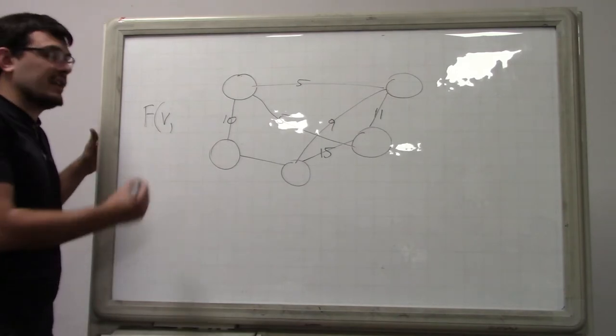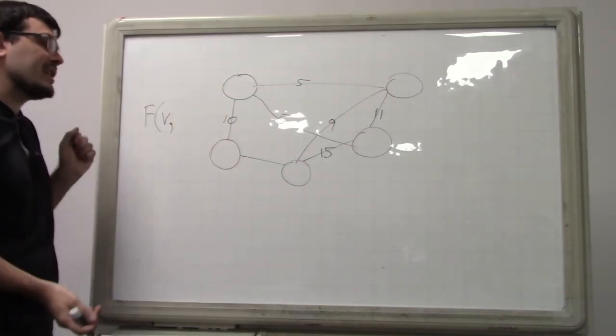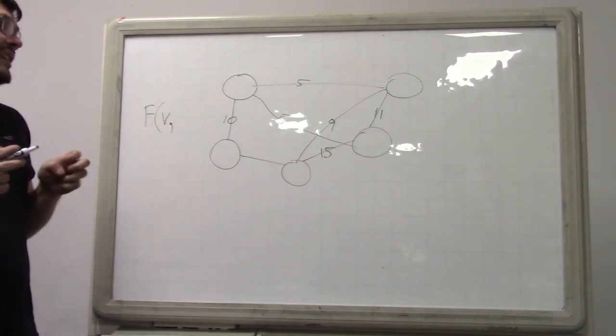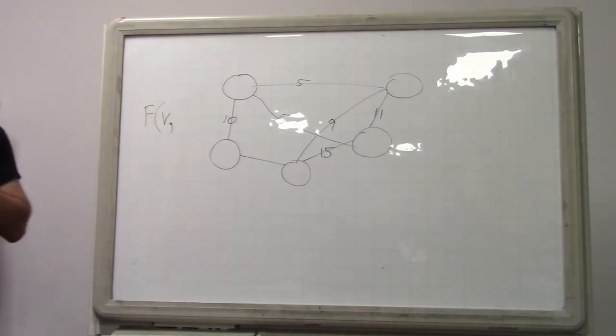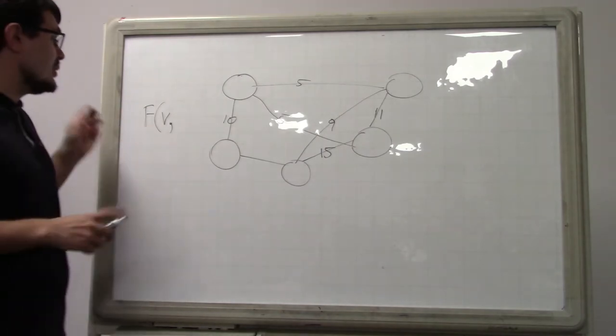Or maybe a pointer to the vertex, or whatever. It's some value. Maybe a memory address, maybe a unique number. And this is no different than what we did dynamic programming on trees in one of the tutorial sessions where we used the node with the tree as a parameter. You can totally do this.